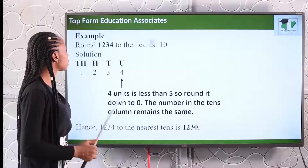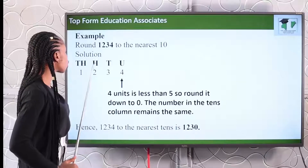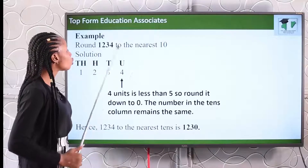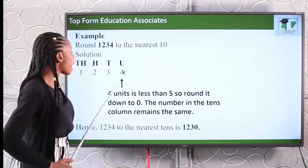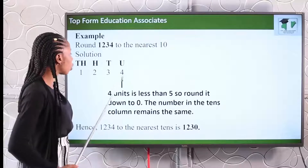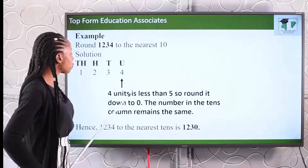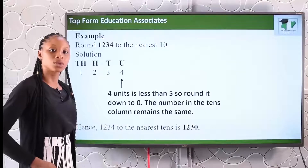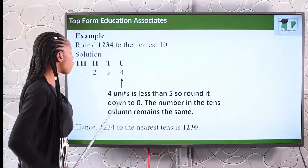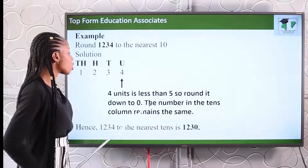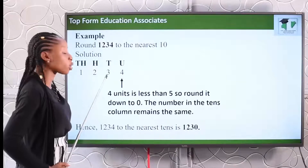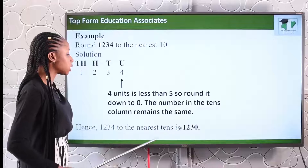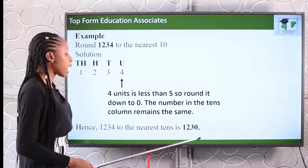Let's take an example. Round 1,234 to the nearest ten. We place it under the thousands, hundreds, tens, and units columns. We look at the units column, and we have 4. Four is less than five, so we round it down to zero. The number in the tens column remains the same. Therefore, 1,234 to the nearest ten is 1,230.